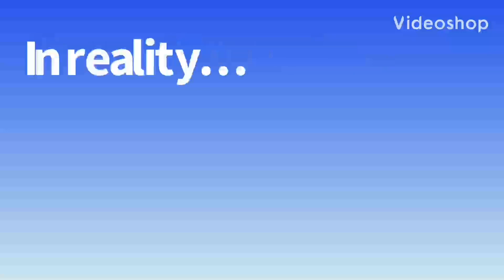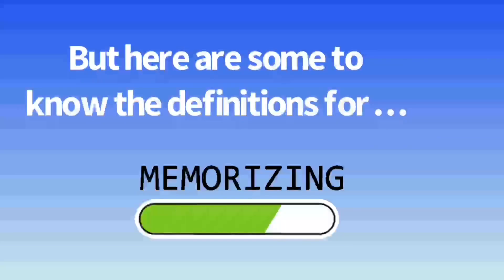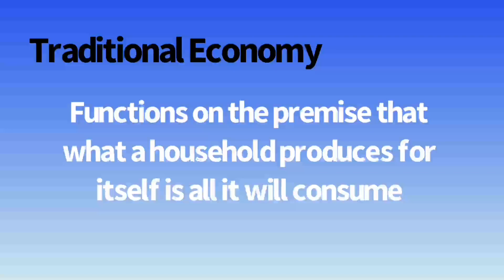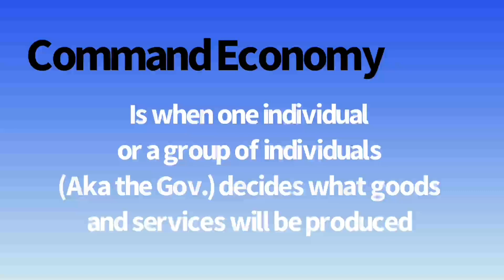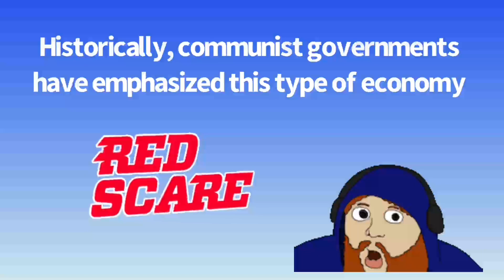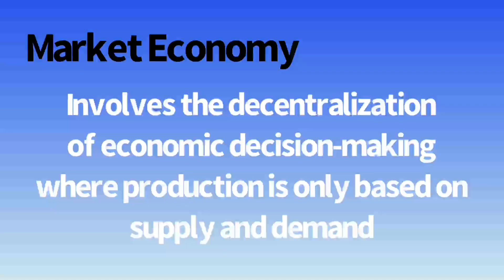There are a few different types of economies around the globe. A traditional economy functions on the premise that what a household produces for itself is all that household will consume, leaving very little room for economic growth. A command economy is when one individual or group, like the government, decides what goods and services will be produced — historically emphasized by communist governments. A market economy involves the decentralization of economic decision making, where production is based on supply and demand. A market is more of a concept than a physical thing — an invisible force combining buyers and sellers. Adam Smith labeled this unforeseen force as the invisible hand.